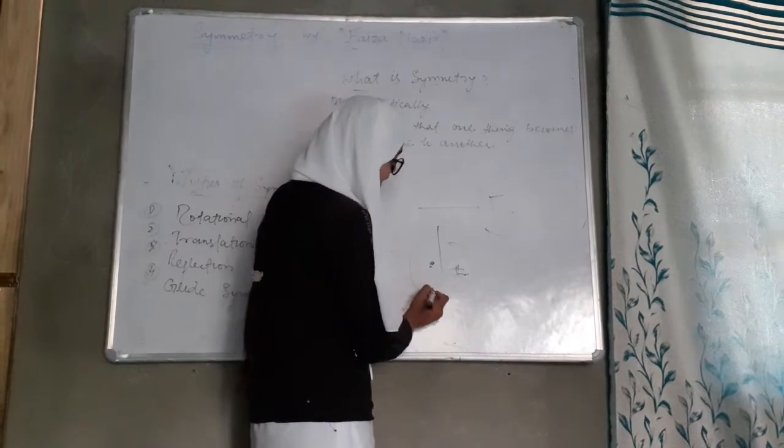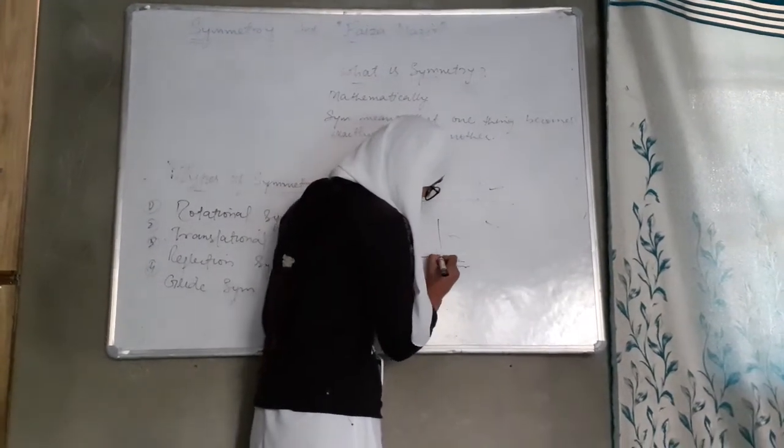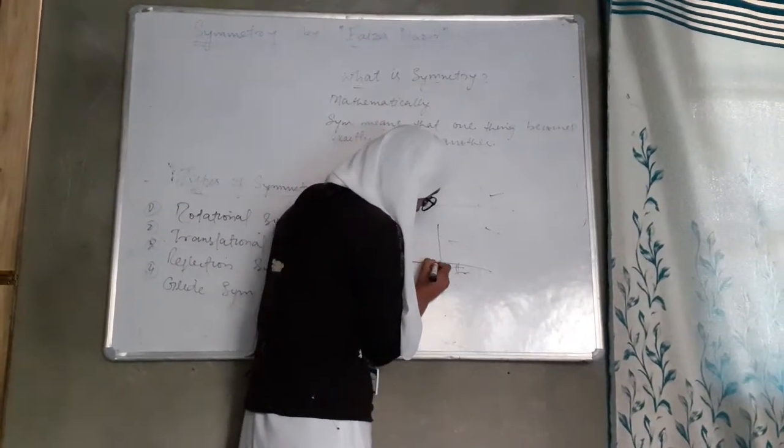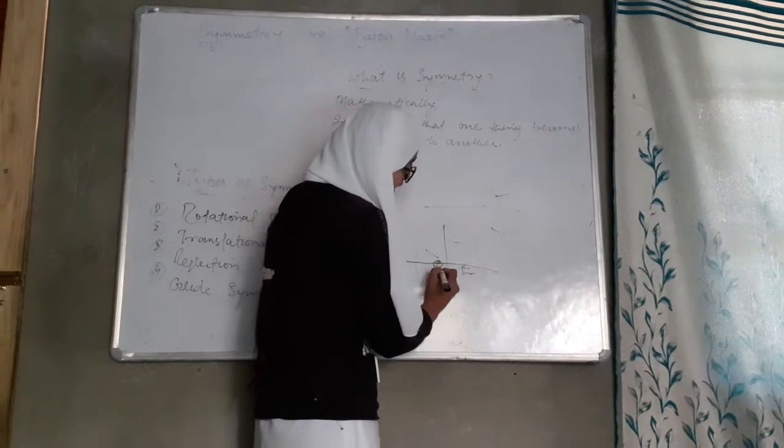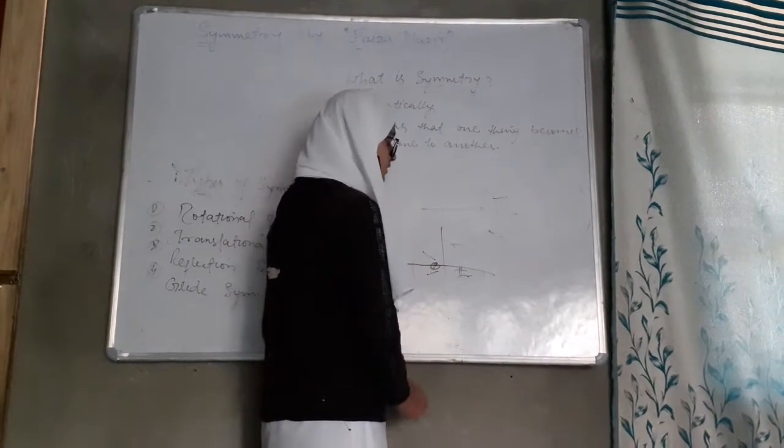This is not symmetry. But if we divide it here, this circle is half. This is the same. This is symmetry.